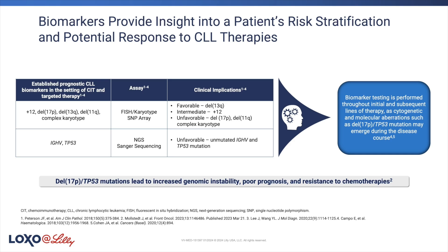We also do molecular testing — we look for TP53 aberrations, and at our center we have a panel that looks for other mutations as well. That testing really gives us a sense of what to expect. It doesn't tell us what to do, but it does provide prognostic information that can be helpful for counseling patients. That's what I do at the time of diagnosis.